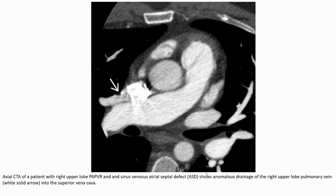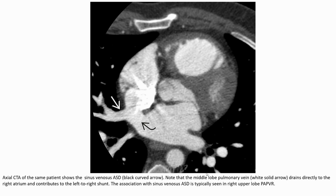Axial CTA of a patient with right upper lobe PAPVR and sinus venosus atrial septal defect shows anomalous drainage of the right upper lobe pulmonary vein (yellow solid arrow) into the superior vena cava. The middle lobe pulmonary vein (yellow solid arrow) is also shown draining directly to the right atrium, contributing to the left-to-right shunt.